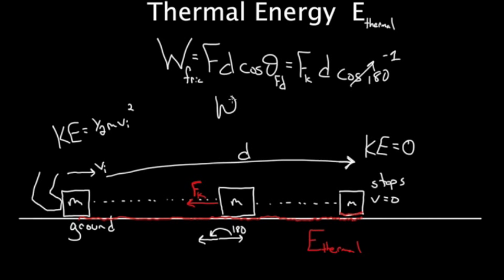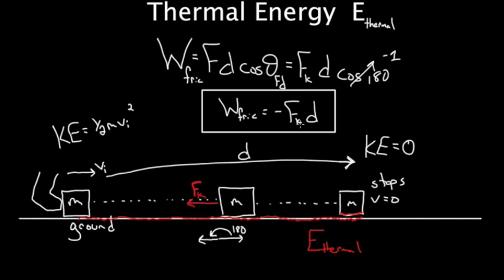So, we've got the work done by friction is negative FKD. This is useful. This tells us what the work was done by friction in this process. How much work was done by friction. This tells us how much energy the frictional force transformed from kinetic energy into thermal energy. So, if we want to know what the thermal energy is, we've got a formula now. This is FKD, is how much energy the friction took from other types of energies and put into thermal energy.